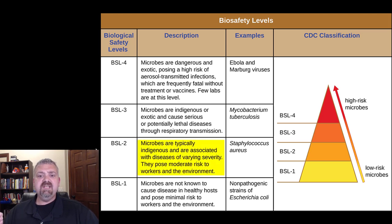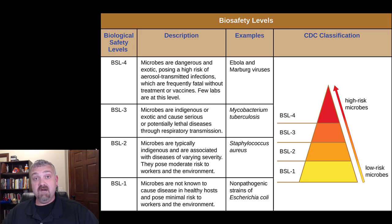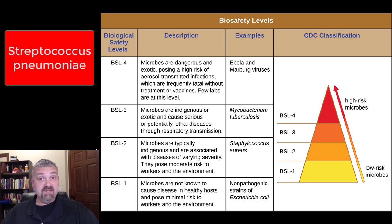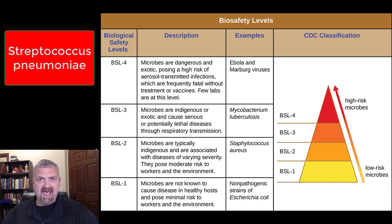BSL 2: microbes are typically indigenous and are associated with diseases of varying severity. They pose moderate risk to workers and the environment. Staphylococcus aureus is an example here. These are much safer than the higher level organisms but you still need to be careful. Streptococcus pneumoniae is still the leading cause of community-acquired pneumonia on the planet, killing somewhere in the neighborhood of 1.4 to 1.5 million humans a year. For healthy people being super cautious in a laboratory environment, it doesn't appear to be that big of a threat.